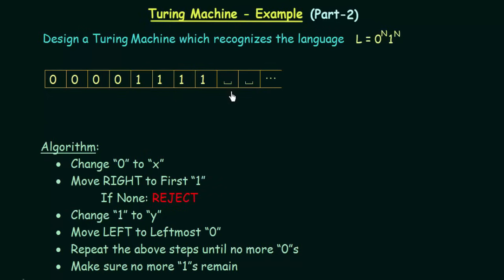Here we have the tape sequence in our Turing machine. The algorithm says: the first step is to change the first 0 to X. We are going to replace the first zero in our tape with X, and then move right until we find the first one. If you cannot find the first one, you have to reject — that string will not be accepted. If you find a one, change that one to Y. After that, move left until you find the leftmost zero. This process will be repeated until no more zeros are there, and you must also make sure no more ones remain.